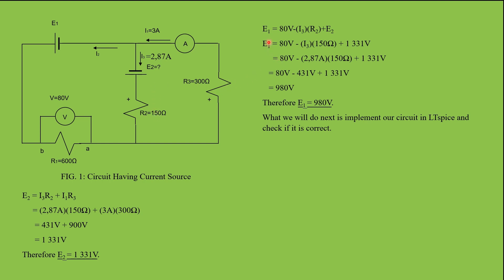E1 equals 80 volts minus I3 times R2 plus E2. That is 80 volts minus I3 multiplied by 150 ohms plus E2, which we calculated at 1,331 volts. That equals 80 volts minus 431 volts plus 1,331 volts, which is equal to 980 volts. Therefore E1 is equal to 980 volts.